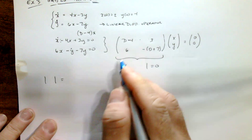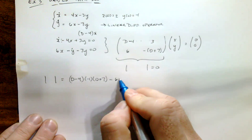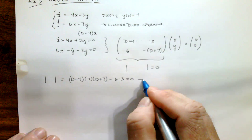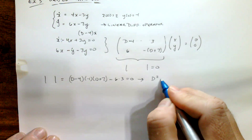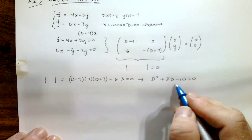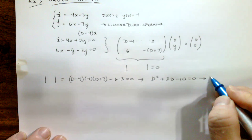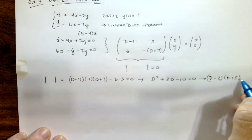Taking the determinant and setting it equal to 0: (D minus 4) times negative 1 times (D plus 7) minus 6 times 3 equals 0. Distributing everything through and simplifying, we get D² + 3D minus 10 equals 0. This factors as (D minus 2)(D plus 5) equals 0.